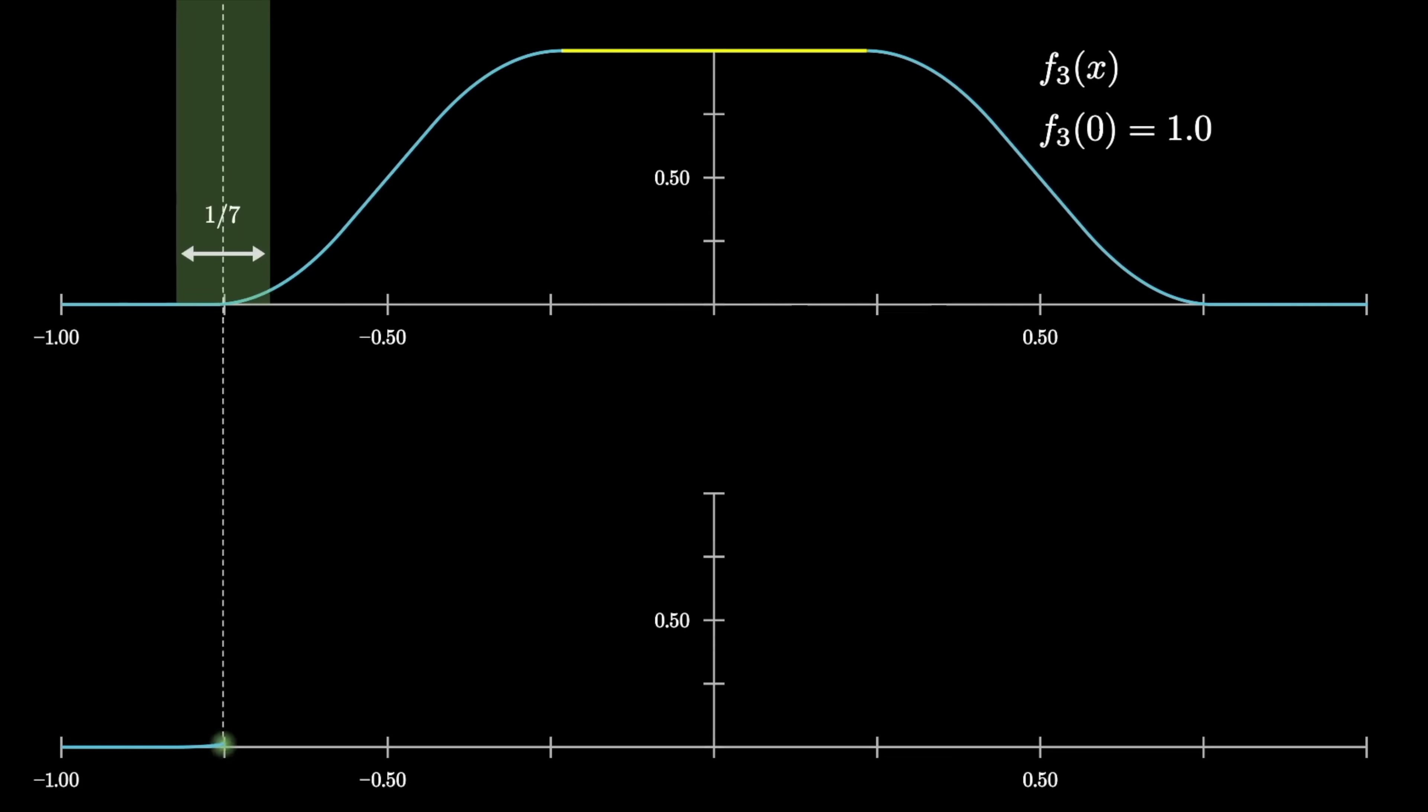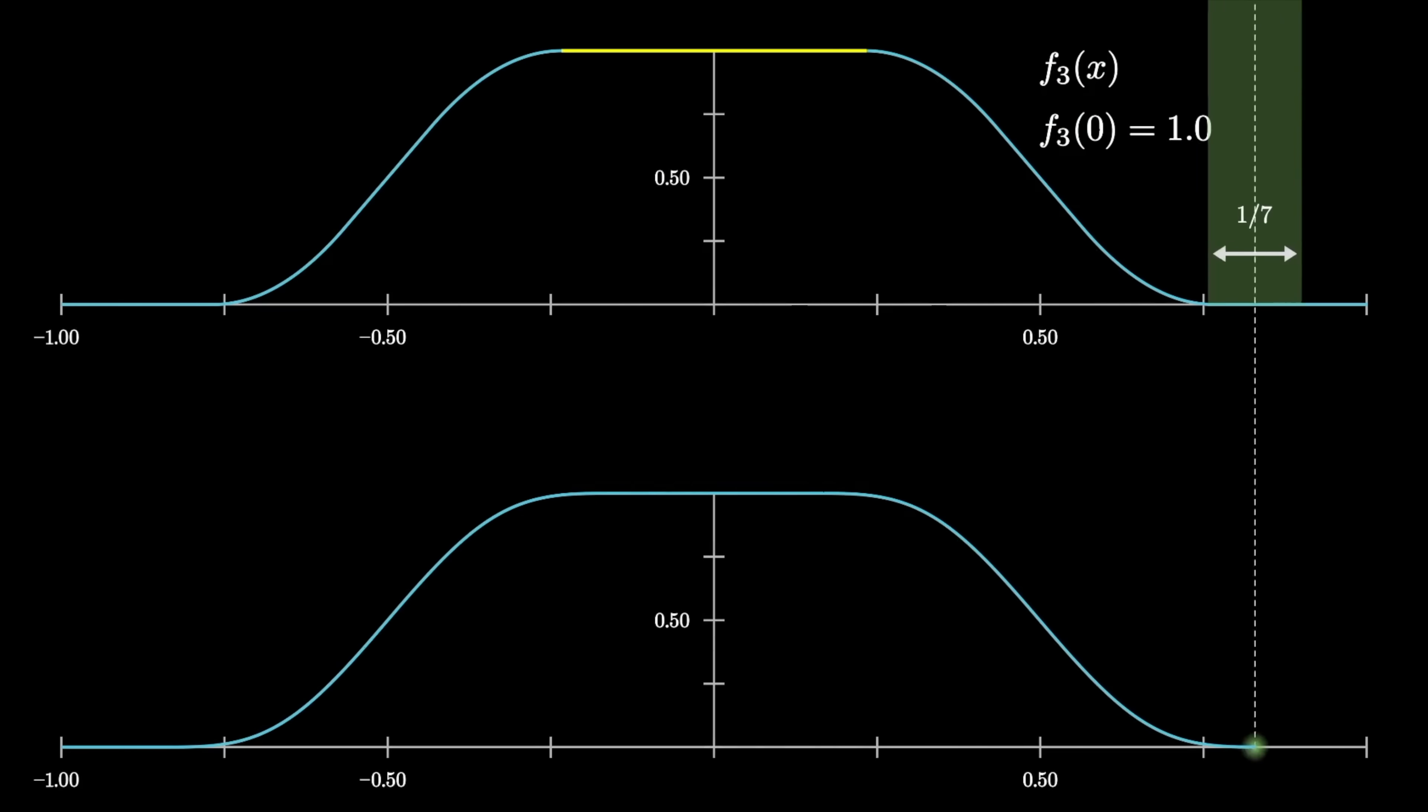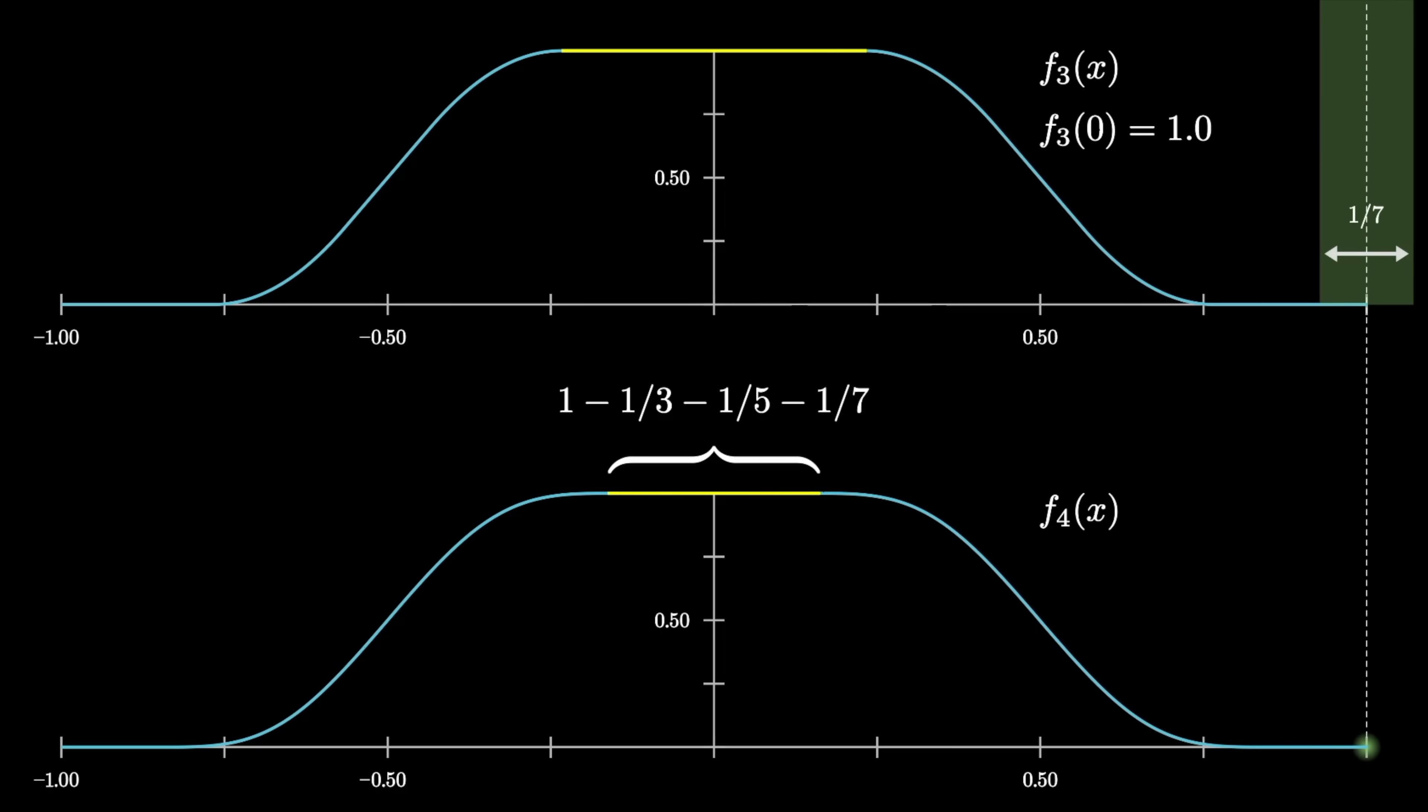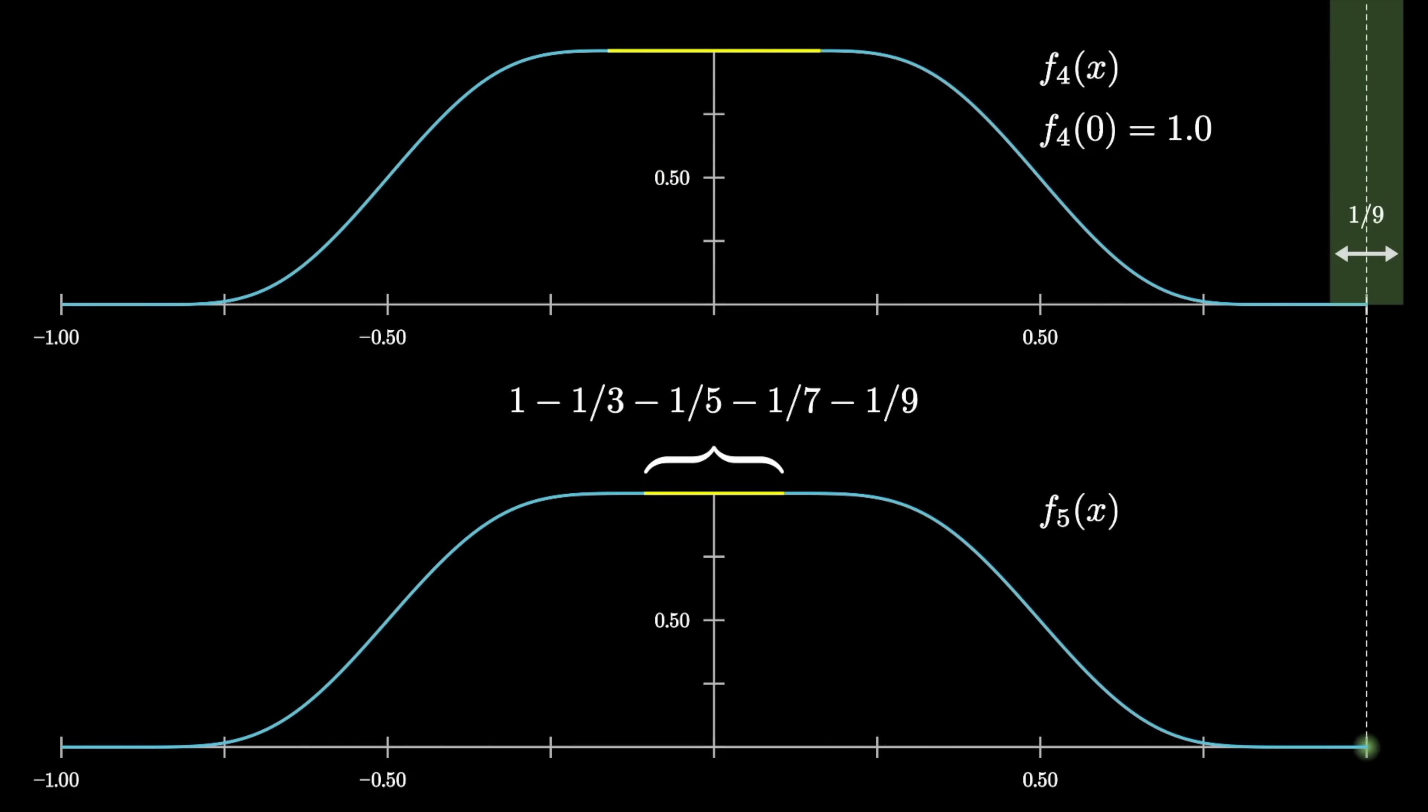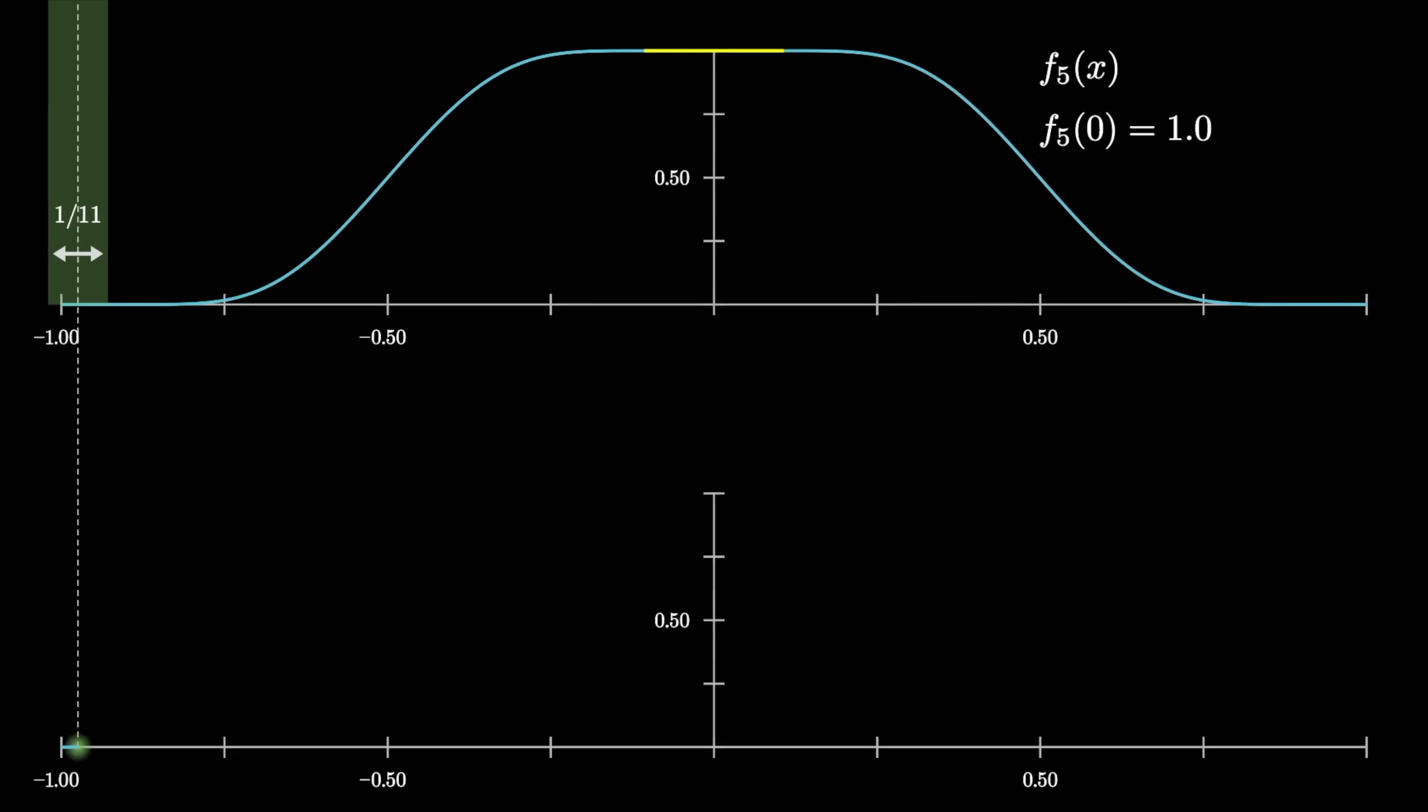The next iteration is a moving average with a window width of 1 seventh. The plateau gets smaller by that 1 over 7. Doing one more iteration with 1 over 9, the plateau gets smaller by that amount. And as we keep going, the plateau gets thinner and thinner.